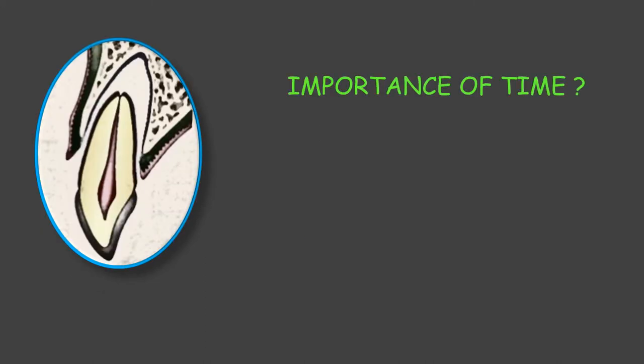The outcome of the treatment is primarily dependent upon how quickly the tooth is re-inserted back in its socket, and the best situation is that this happens within the first one hour. The next factor is the age of the patient. It has been observed that the chances of pulp survival after re-implantation are maximum if the root formation is incomplete at the apex — that means it's an immature root. Whereas in a completely formed root, the chances of pulp survival are completely nil.